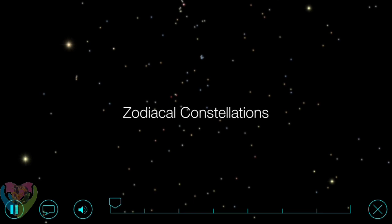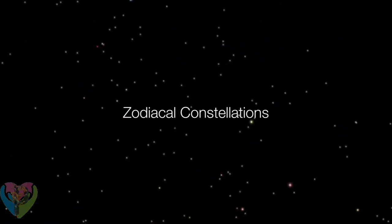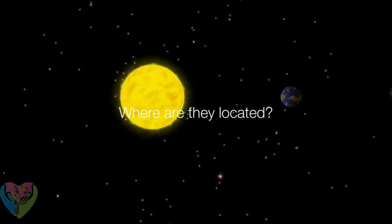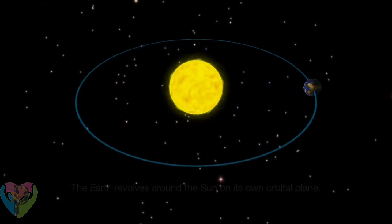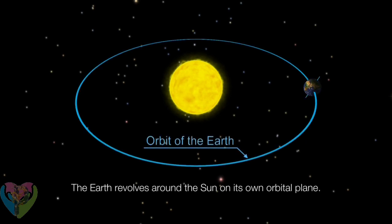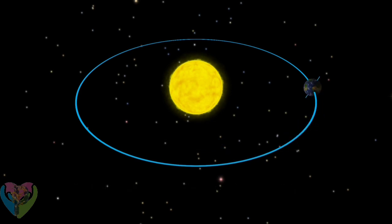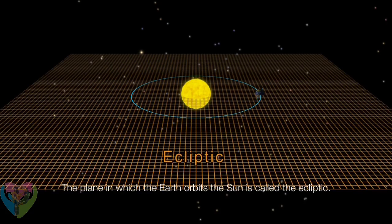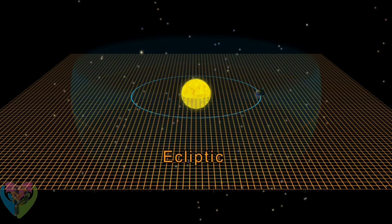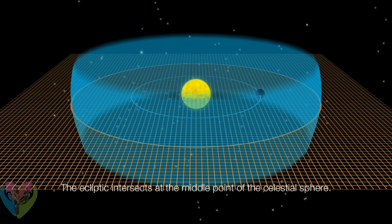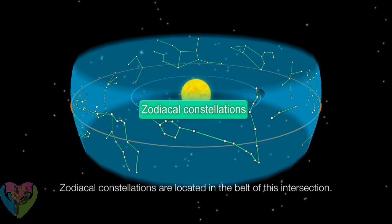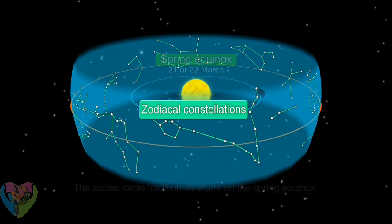Zodiacal constellations. What are zodiacal constellations? Where are they located? The earth revolves around the sun on its own orbital plane. The plane in which the earth orbits the sun is called the ecliptic. The ecliptic intersects at roughly the middle point of the celestial sphere, and the circle of the ecliptic is divided into twelve equal parts. Zodiacal constellations are located in the belt of this intersection.